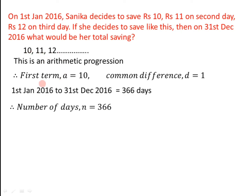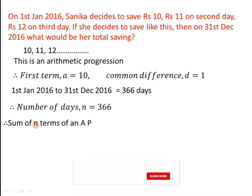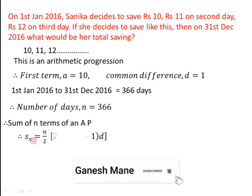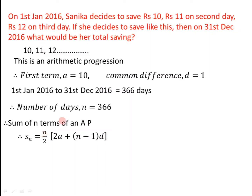This is an arithmetic progression which has the first term, common difference, and the number of days in that particular year. We have to find her total savings in that year, meaning we have to find the sum of all these numbers. We have the formula for sum of N terms of an AP: Sn = N/2 × (2A + (N−1) × D), where N is the total number of terms, A is the first term, and D is the common difference.